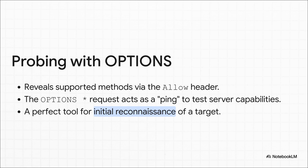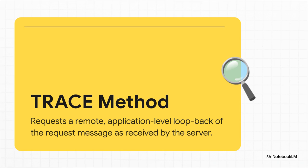Next up, OPTIONS. Developers use it to see what a server can do. We use it for stealthy recon. It's perfect. A simple OPTIONS request to an API endpoint, say /api/users, might come back with an Allow header. And maybe that header says GET, POST, and DELETE. Just like that, with one harmless-looking request, we've discovered a potentially dangerous method is enabled, and we've got our next target. Then there's TRACE. It's designed to be a simple diagnostic tool. All it does is echo back the exact request the server received. If we can trick a victim's browser into sending a TRACE request, the server's response will echo back the victim's request, including all their headers and cookies, even HTTP-only ones. That is the essence of a cross-site tracing, or XST, attack.